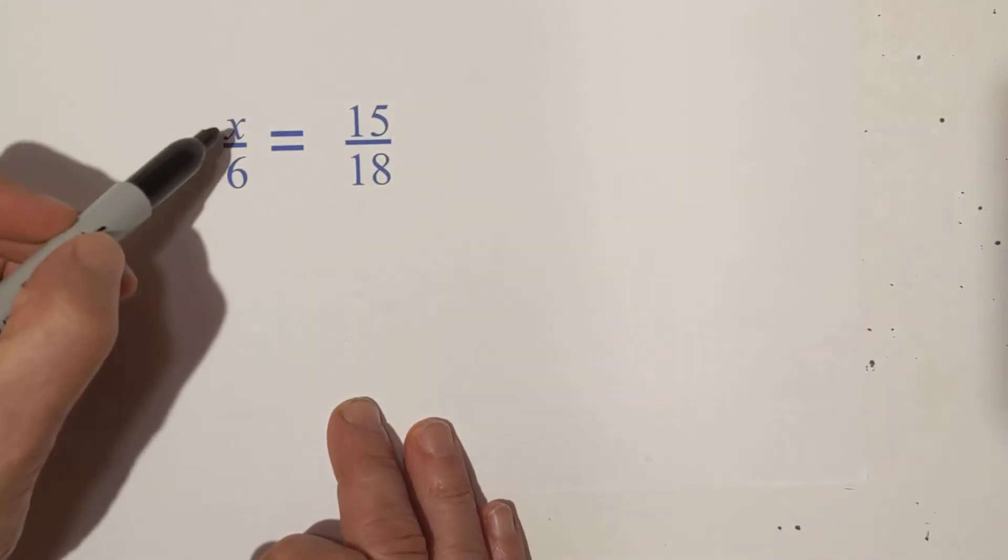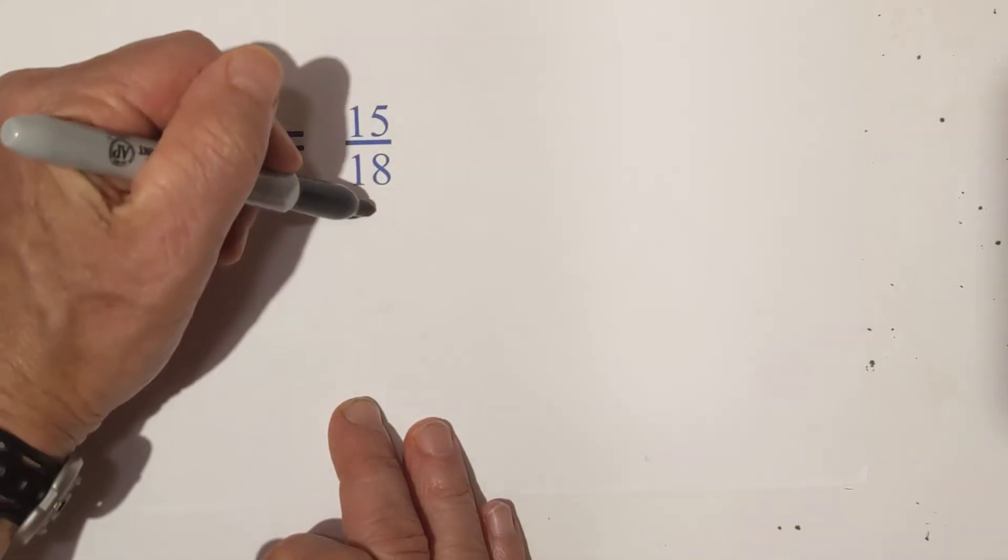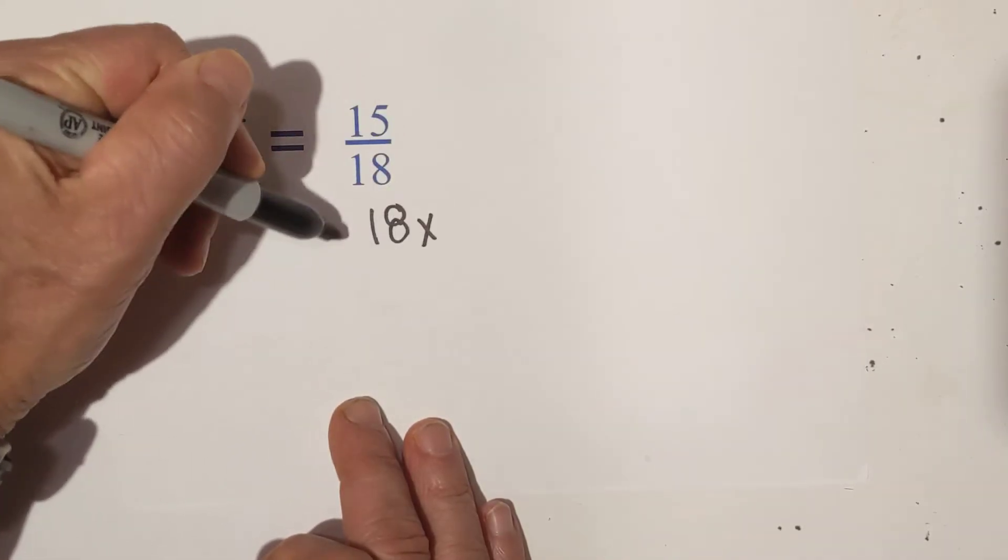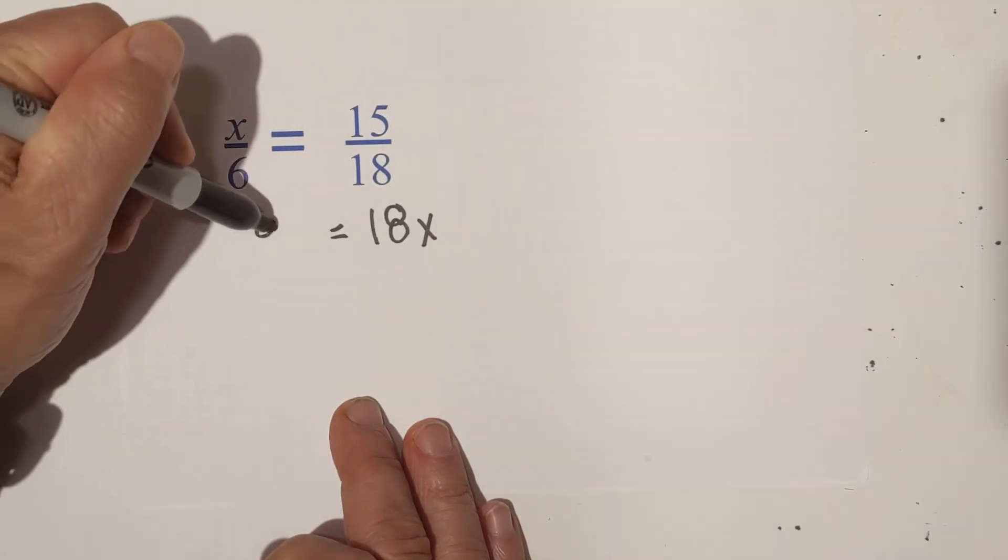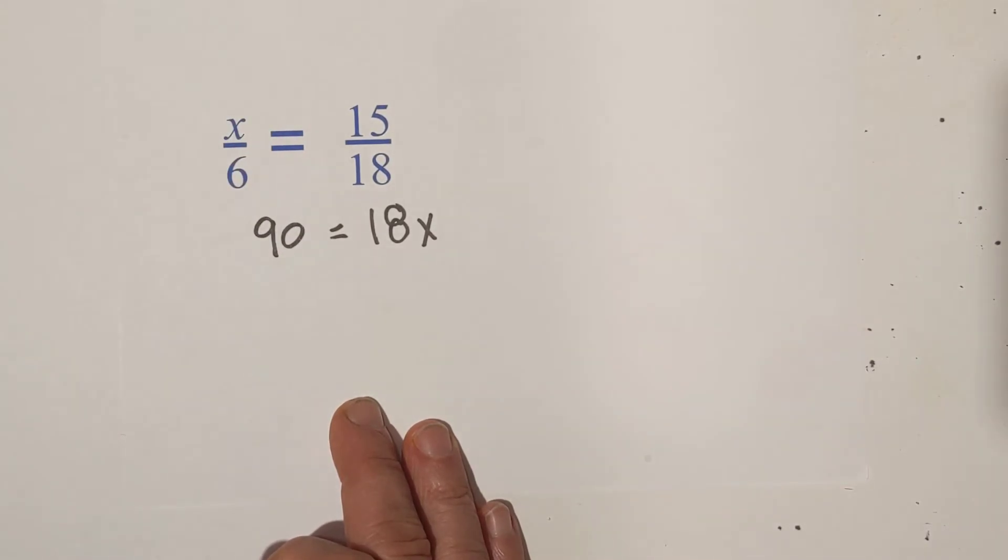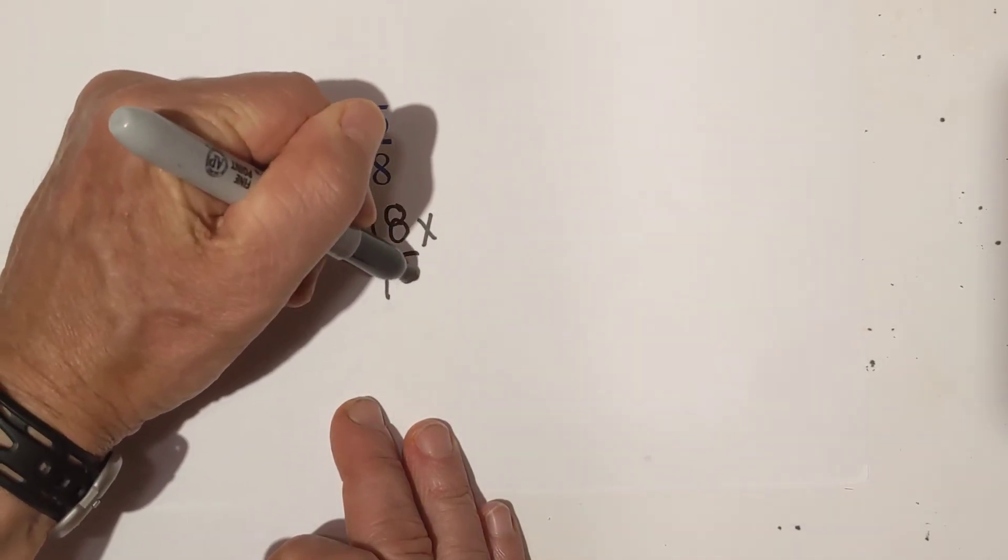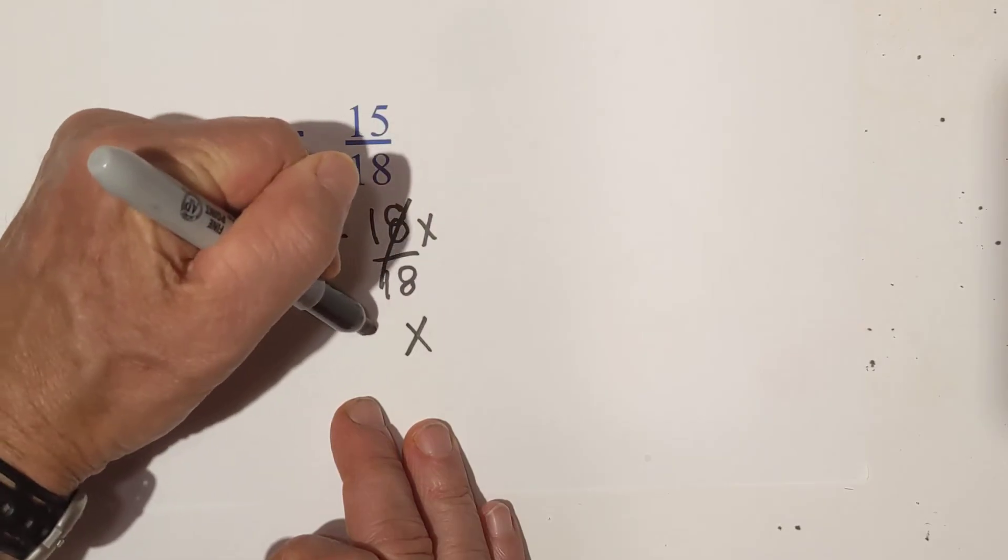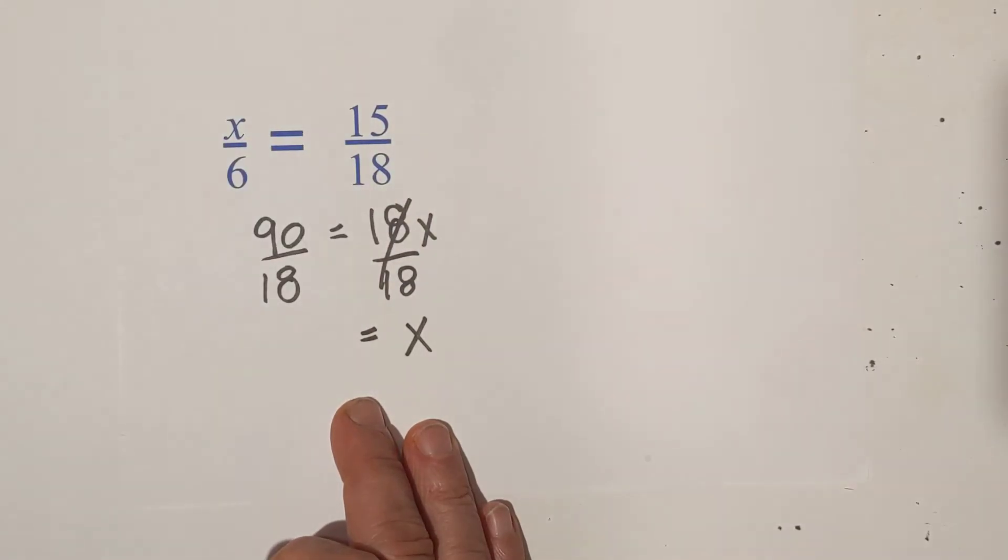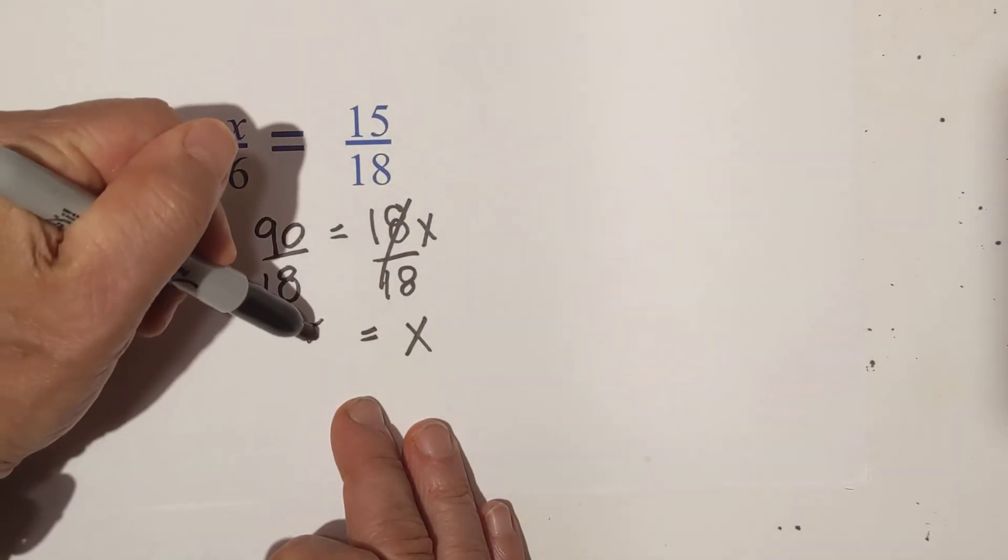And here we go. We have x times 18, so that would be 18x is equal to 15 times 6, and 15 times 6 is 90. So now all we do is we divide both sides by 18, and these cancel, bring down the x. And 18 goes into 90, 5 times.